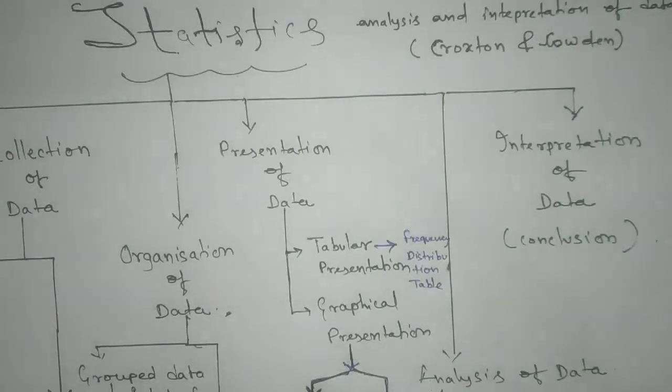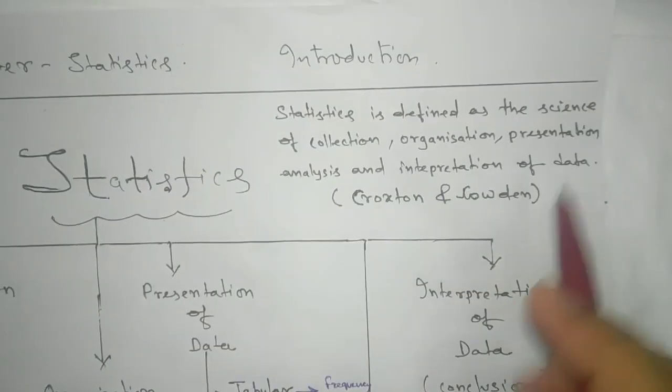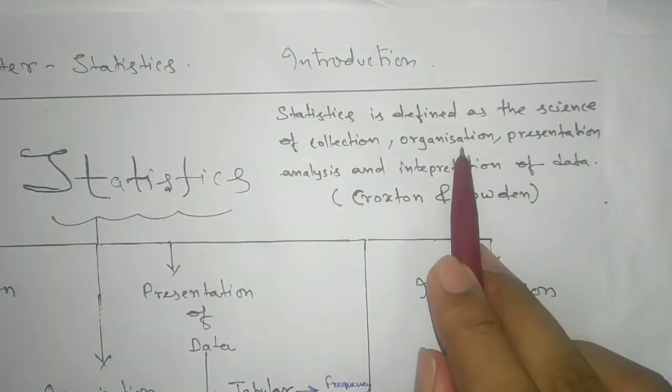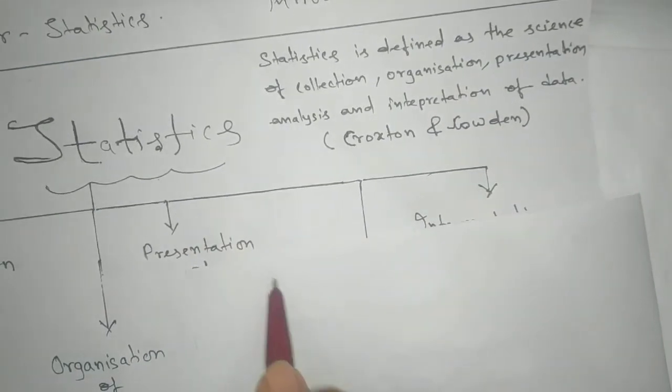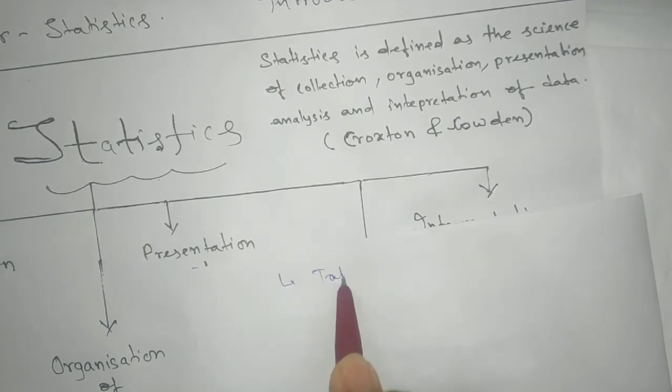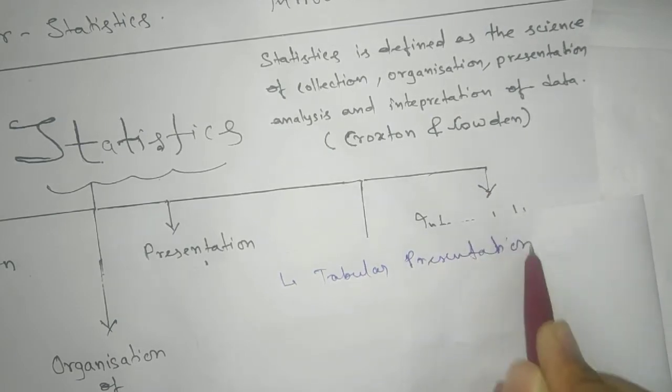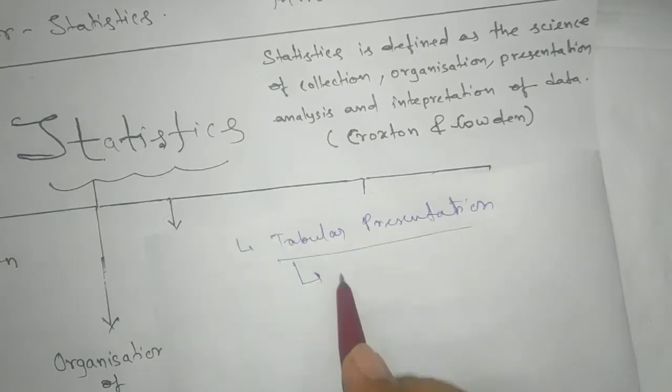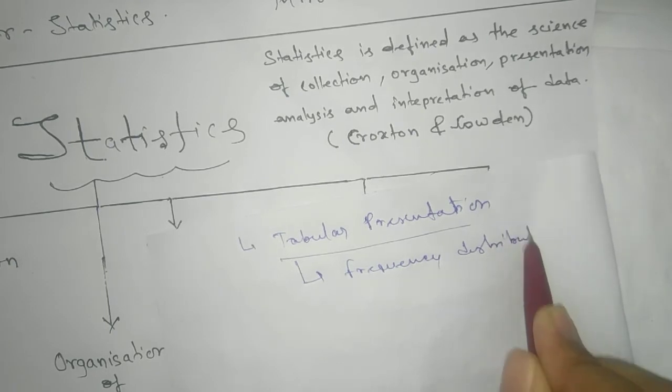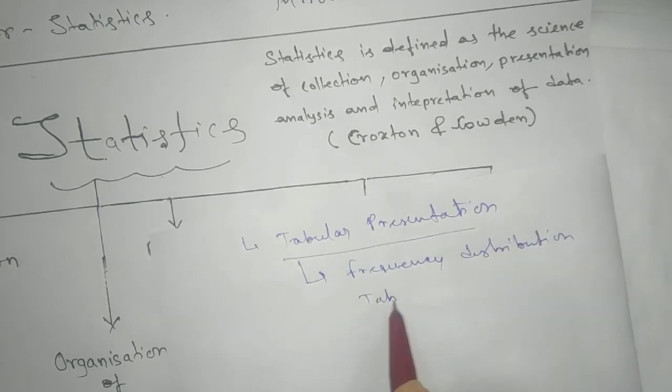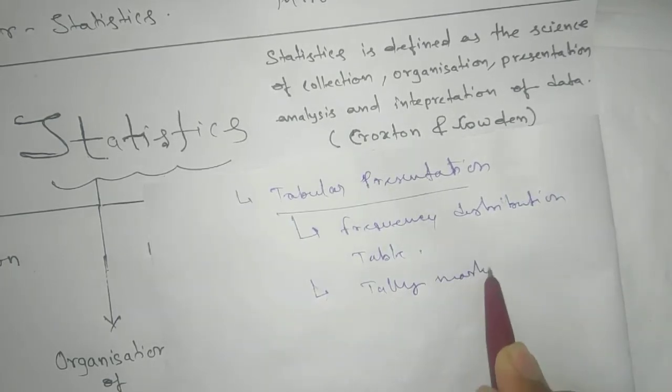Now we will proceed for presentation. So here the first one see collection, organization, and third one is presentation. One is tabular presentation. In tabular presentation for class nine we have word frequency distribution table or sometime we have tally mark table also.